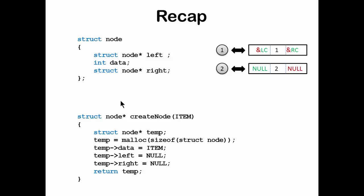This is a recap of how nodes are represented — the same concept as the binary tree. Nodes will have left child and right child addresses, and in between the data portion. Data is integer type and left and right are pointer types in the structure. When creating a node, the malloc function is used to allocate memory, populate data with the item, and set left and right child to null since they are not yet connected.